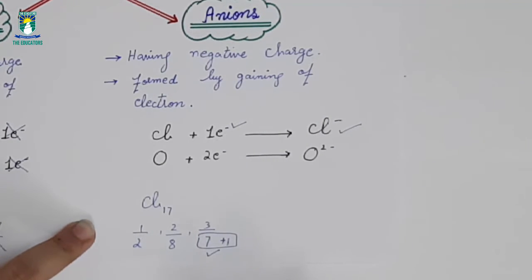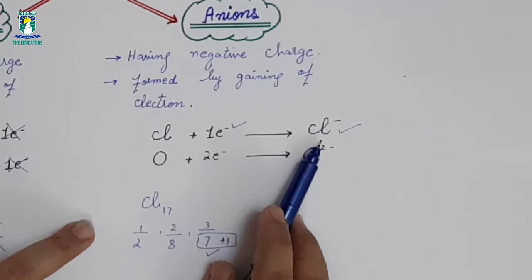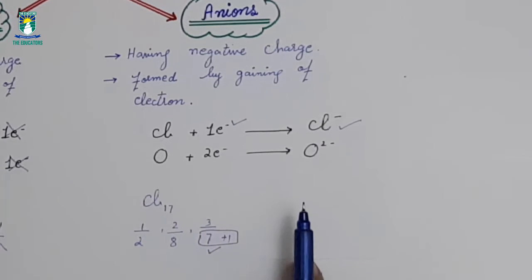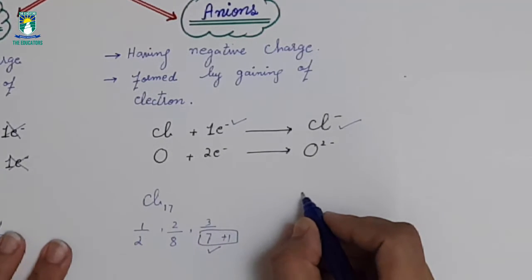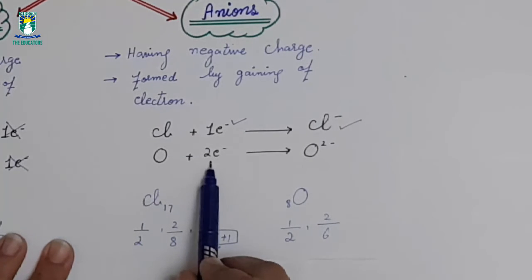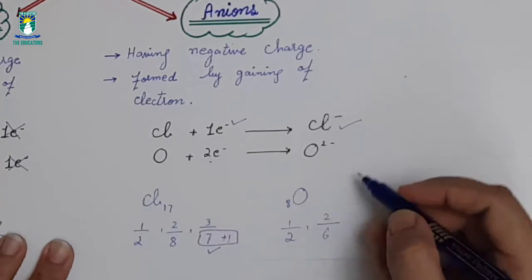What does chlorine do? Gains 1 electron and chlorine becomes anion, and it will be stable. Now oxygen. Oxygen's outermost shell has 6 electrons. Oxygen atomic number is 8. First shell has 2 electrons and second shell has 6 electrons. So it grabs 2 electrons and makes ion.